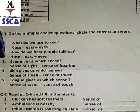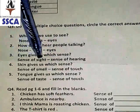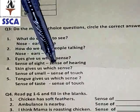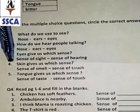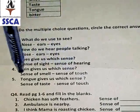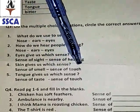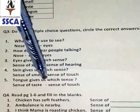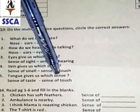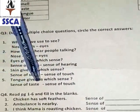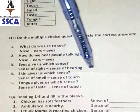The third is: Eyes give us which sense? Eyes give us sense of sight, or eyes give us sense of hearing — circle the right answer. The fourth is: Skin gives us which sense? Skin gives us sense of smell, or skin gives us sense of touch — which one is correct? Circle the correct answer. The fifth is: Tongue gives us which sense? Tongue gives us sense of taste, or tongue gives us sense of touch — circle the right answer in your copy.